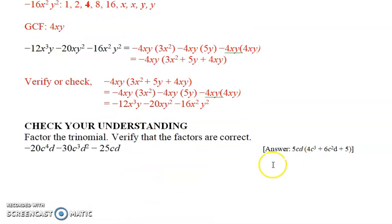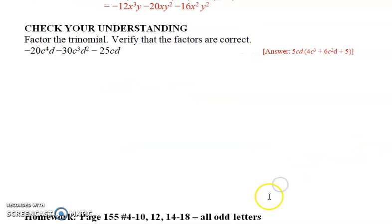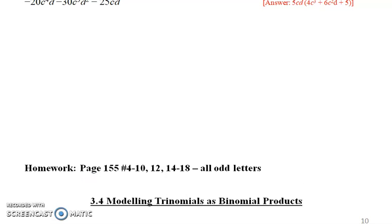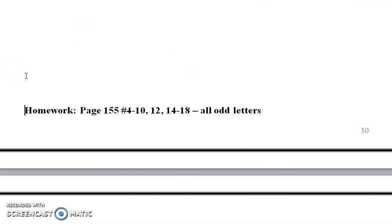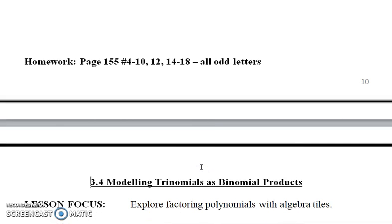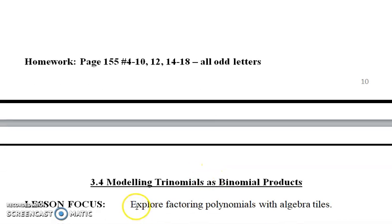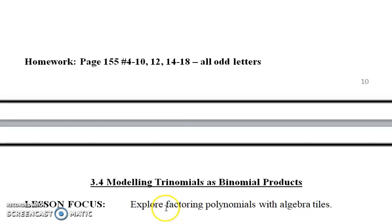Just check your understanding, you guys can try that one. There's answers right here beside you, you can take a peek. Some homework questions that go along with this, they're on page 155, numbers 4 through 10, 12, 14, and 18, and you can just use odd letter questions. In the next video we'll do 3.4, modeling trinomials as binomial products. This is really getting into factoring. So thanks again folks, and we'll see you again in the next video.